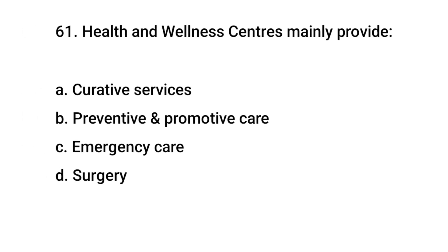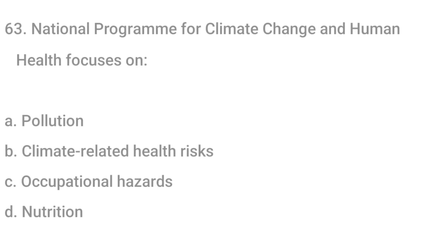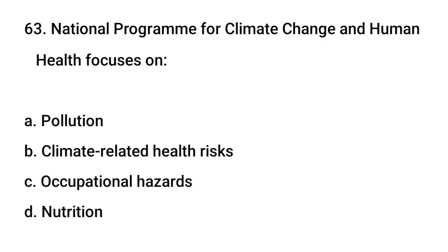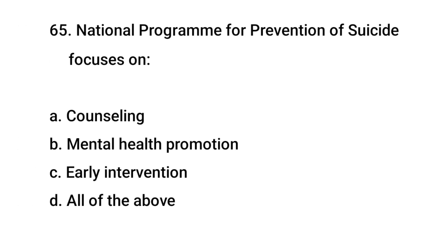Question number 61: Health and Wellness Centers mainly provide — the right answer is B: Preventive and Promotive Care. Question number 62: Free Drugs and Diagnostic Scheme comes under — the right answer is A: NHM. Question number 63: National Program for Climate Change and Human Health focuses on — the right answer is B: Climate-Related Health Risks. Question number 64: National Program for Control of Cancer includes — the right answer is D: All of the above. Question number 65: National Program for Prevention of Suicide focuses on — the right answer is D: All of the above.